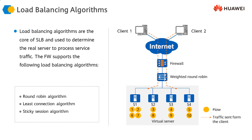The least connection algorithm is used when we do not want to overload a server. In round robin, the number of connections handled by each server may differ. With least connection, the firewall checks how many connections each server is currently handling, and forwards the next request to whichever server has the fewest connections, keeping connection counts roughly equal across all servers.